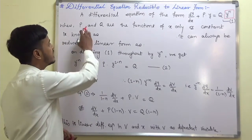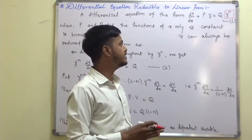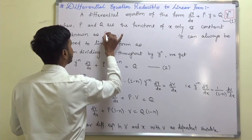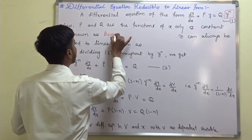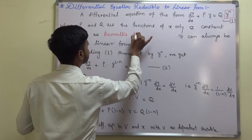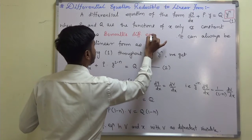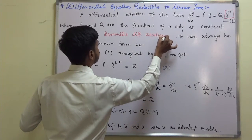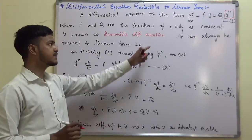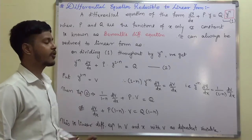When P and Q are functions of x only, or constants, this type of equation is known as Bernoulli's differential equation. This is Bernoulli's differential equation, and it can always be reduced to a linear form.